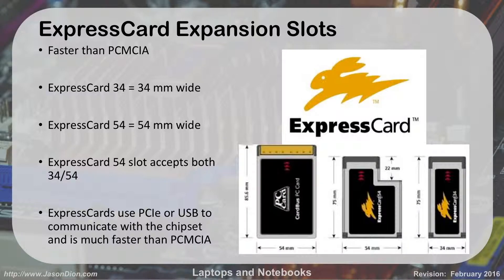The upgrade to the PCMCIA card was the Express Card, which is another form of expansion for laptops. They come in two sizes: Express Card 34 or Express Card 54. That number indicates how wide the card is physically — either 34 millimeters or 54 millimeters. If you have a 54 slot, it will fit a 34. A 34 will not fit a 54 — it's too big.